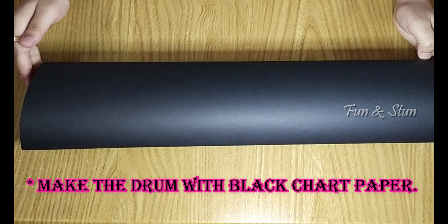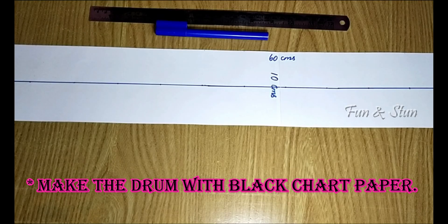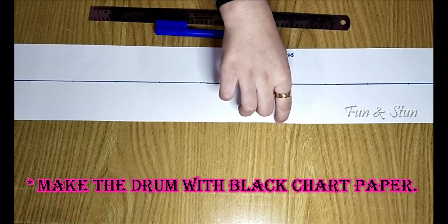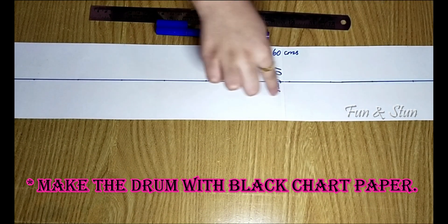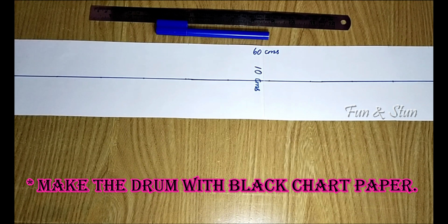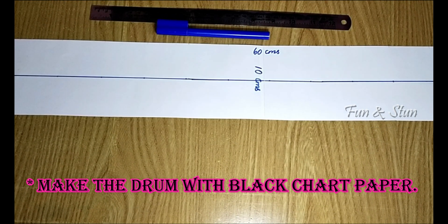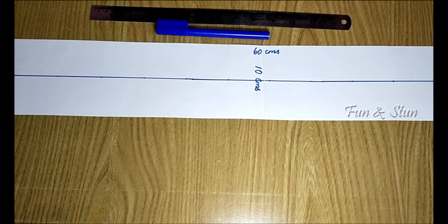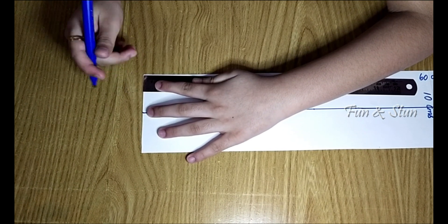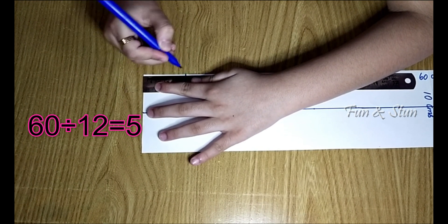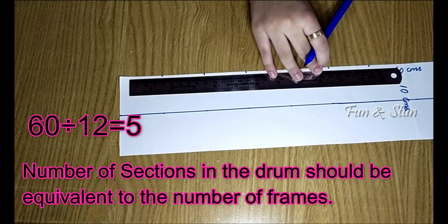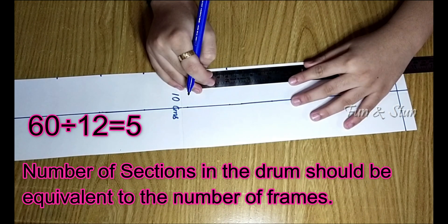We need to make the drum with black chart paper. To make the measurements visible, I'm making it with white paper. I have taken a chart with 60 centimeters length and 10 centimeters width. Mark a line in the center to divide the width into 2. This 60 centimeters is the circumference of the lid I have. The circumference will differ according to the lid you choose. As I'm going to make 12 sections in the drum, we have to divide 60 by 12 that is equal to 5 centimeters. Mark a point at every 5 centimeters.